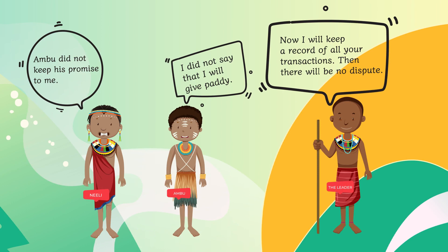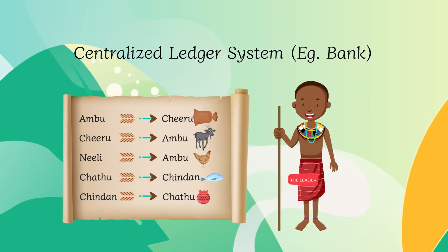In this situation, they need the help of an intermediary. The intermediary records the transactions on their behalf. So here comes a centralized ledger system.